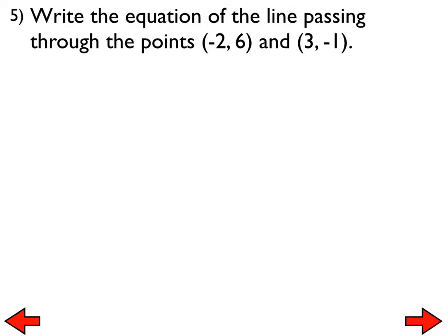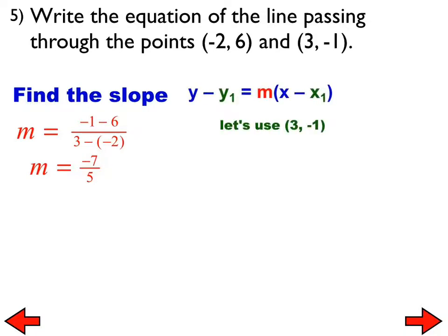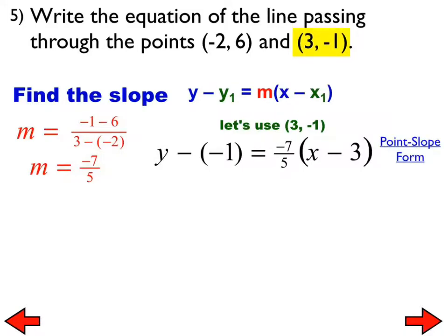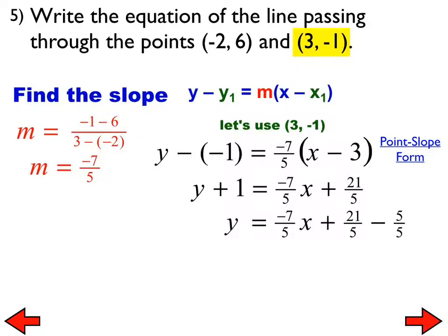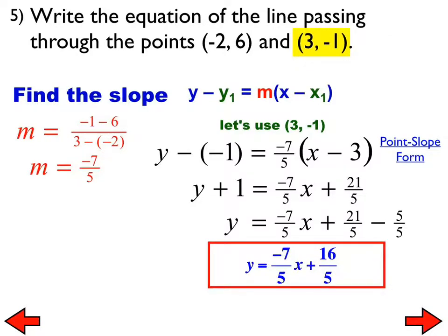Number 5: find the slope first — it comes out to negative seven-fifths. It doesn't matter which ordered pair you use; I'll use 3, negative 1 because it has smaller numbers. Substitute the ordered pair, add the opposite on the left, use the distributive property, then subtract 1 from both sides. Converting to a common denominator gives y equals negative seven-fifths x plus sixteen-fifths.